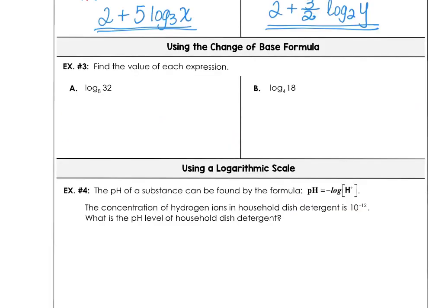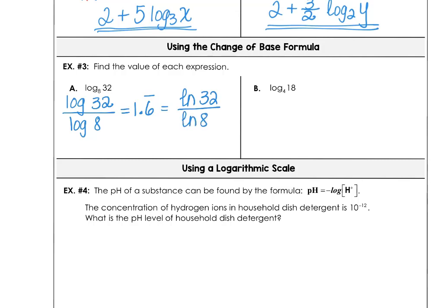For example 3, you're going to need your calculator — we want to use the change of base. You can use any base you want, or using base 10: log of 32 divided by log of 8. If you calculate this, you get 1.6 repeating. You can also try the natural log of 32 divided by the natural log of 8, and we get the same answer — 5 thirds, or 1.6 repeating.